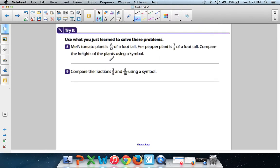Mel's tomato plant is 8 over 12 of a foot tall. Her pepper plant is 3 fourths of a foot tall. Compare the heights of the plants using a symbol. Alright. Alright. Alright.